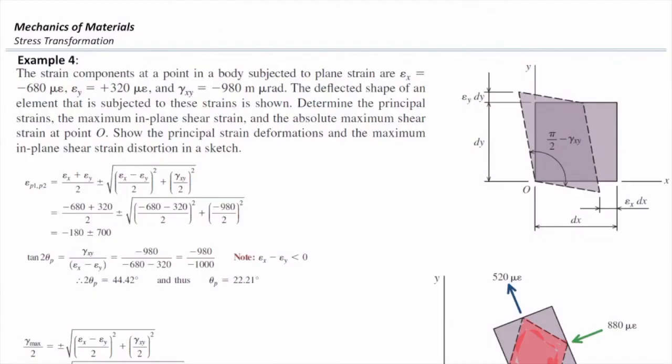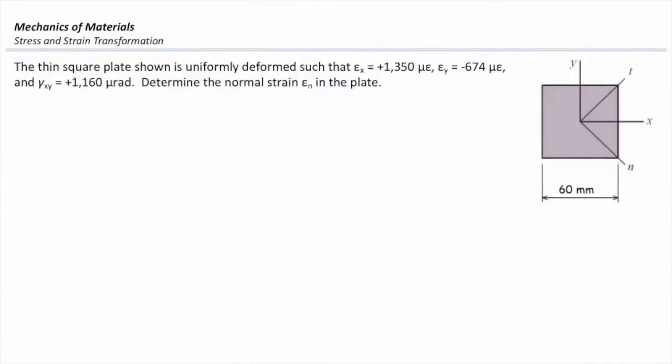I'm going to ask you a quick question, and I will give you five minutes to answer that. Again, that is a super easy problem. Consider this case. I think this is one question that I asked in one final exam. Maybe I'm not sure. So consider this case. Strain in the x direction is 1350. In the y direction is negative 674. And the gamma x1 is 1160 microradian. Determine strain in the n direction.